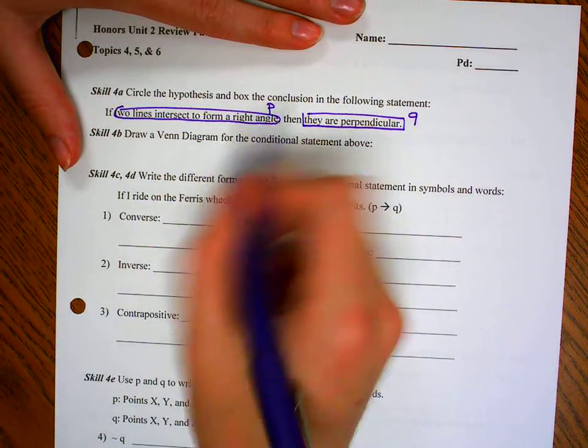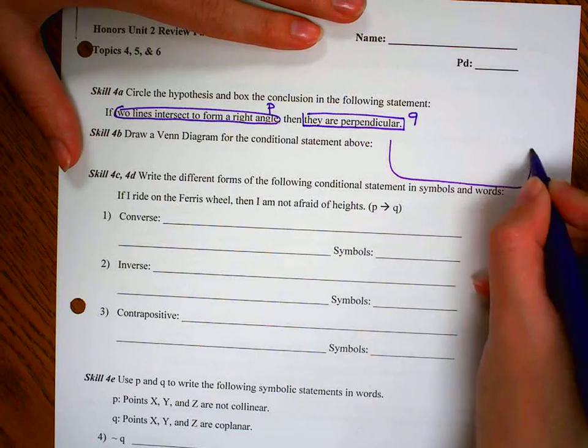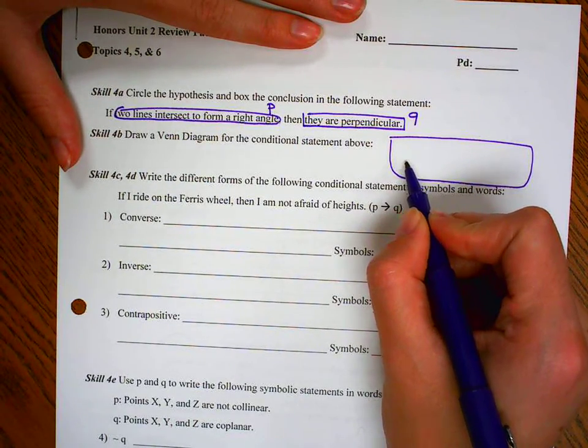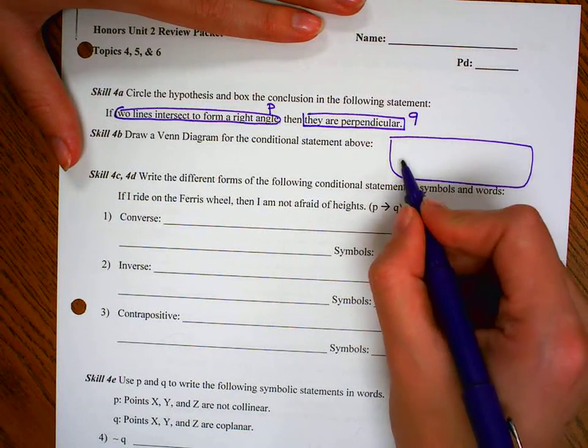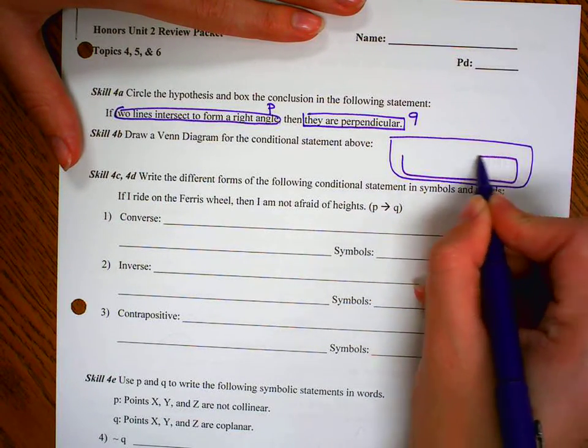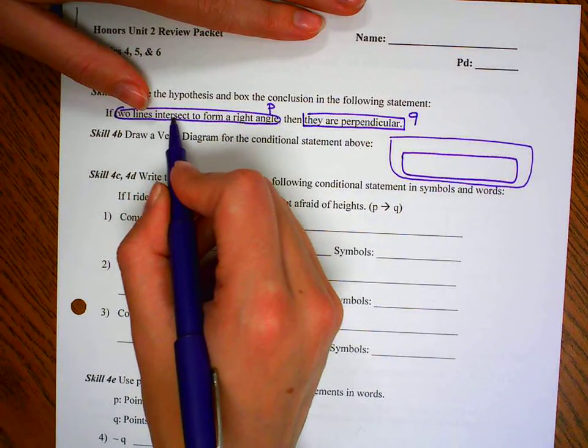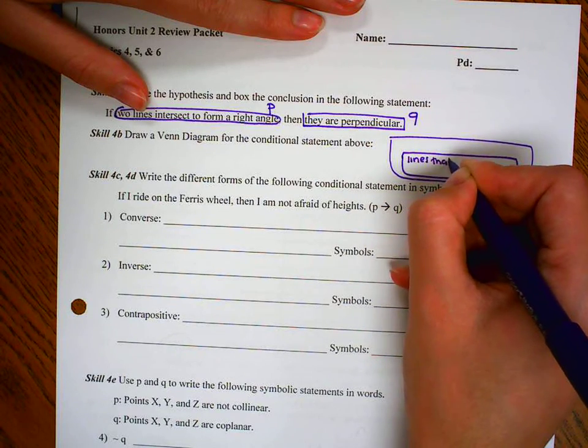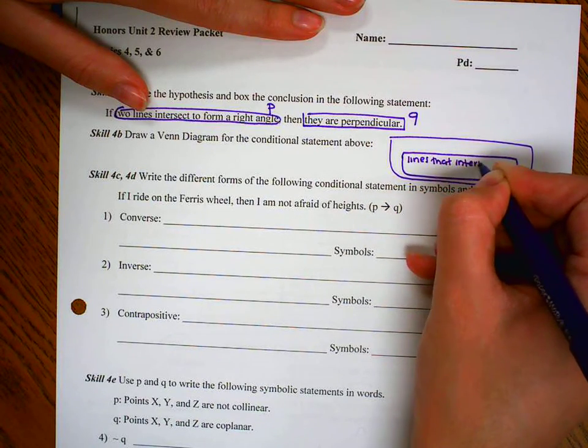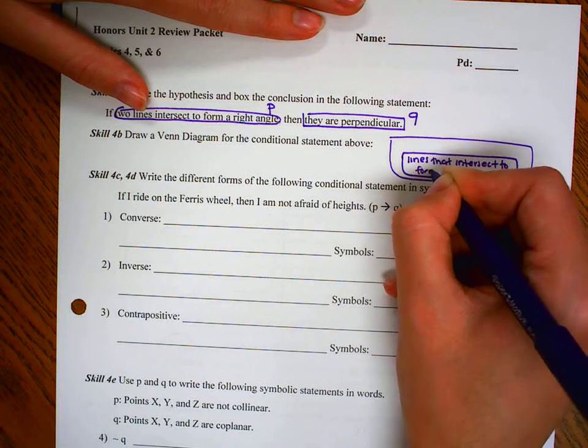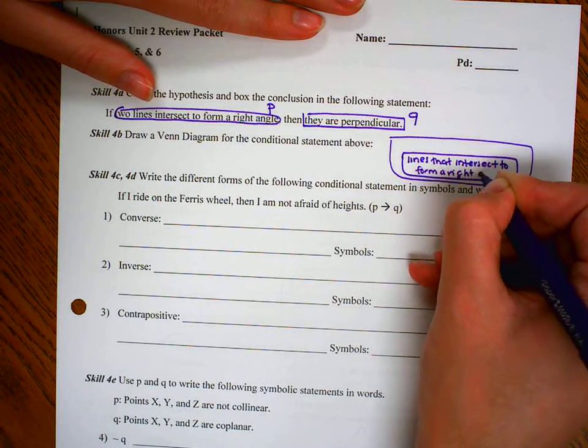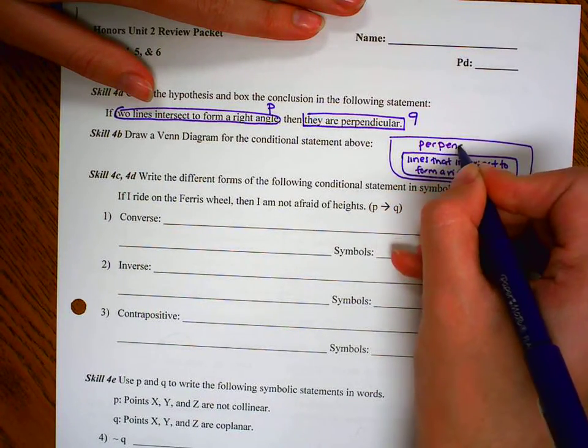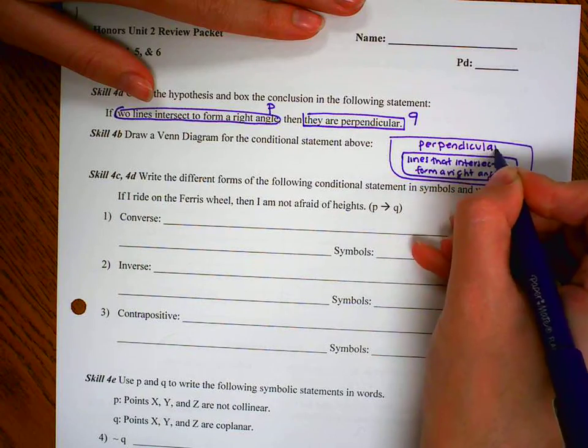Now we're going to draw a Venn diagram to represent this. They can be circles, they can be boxes, it doesn't really matter, but what does matter is the stuff that comes after the if is on the inside, the stuff after the then is on the outside. On the inside, I'm going to write maybe lines that intersect to form a right angle. And then my outside category would be perpendicular.